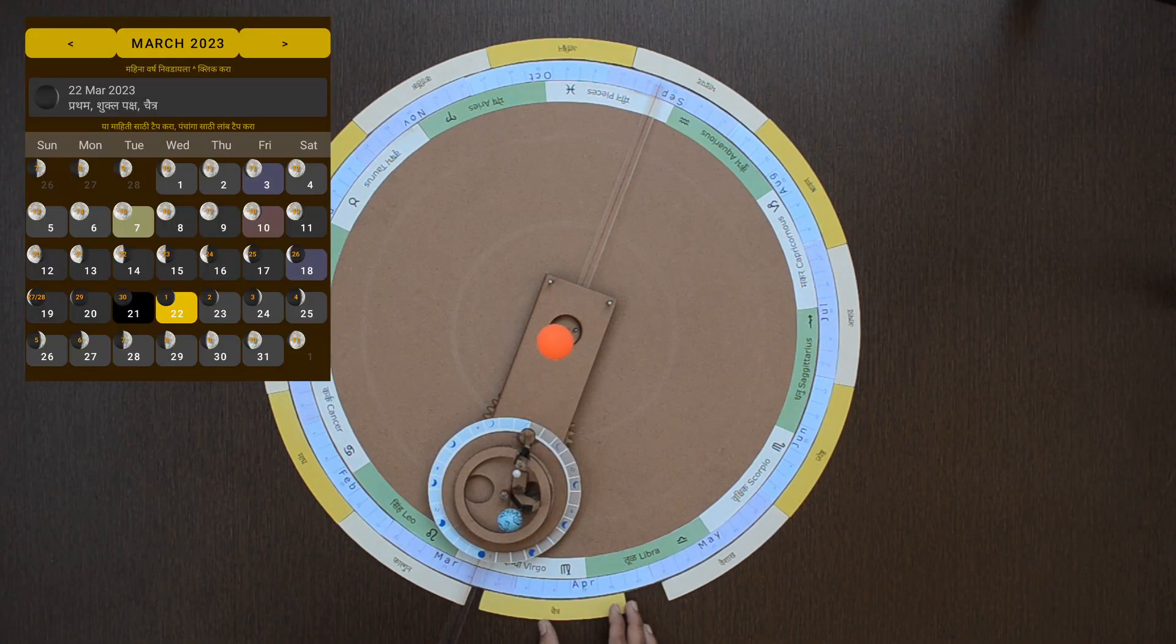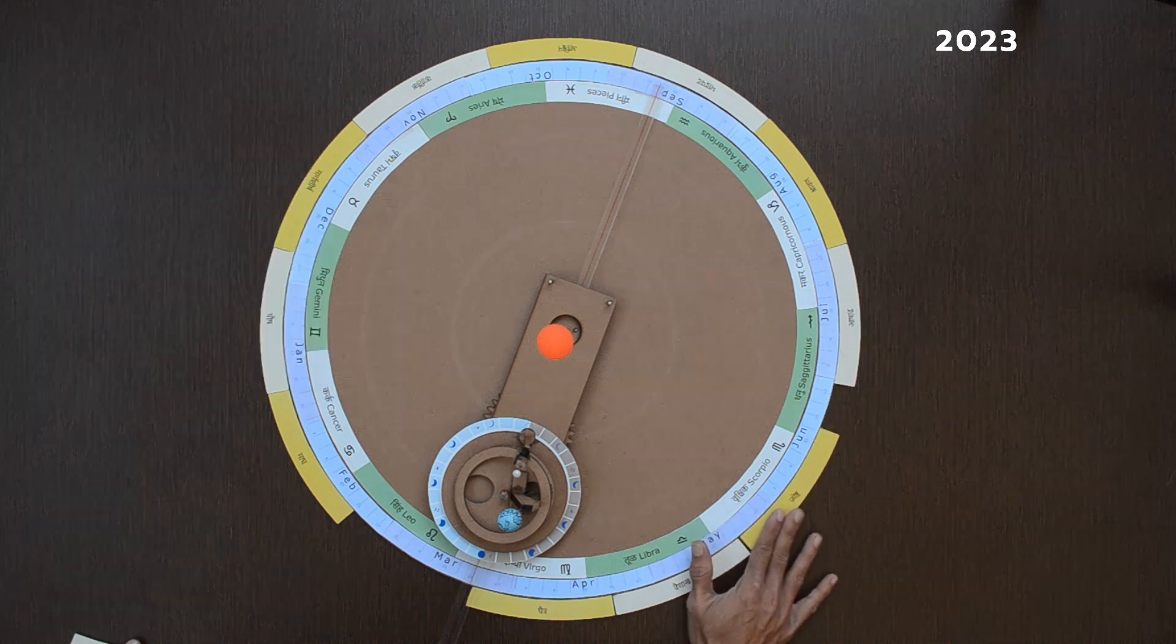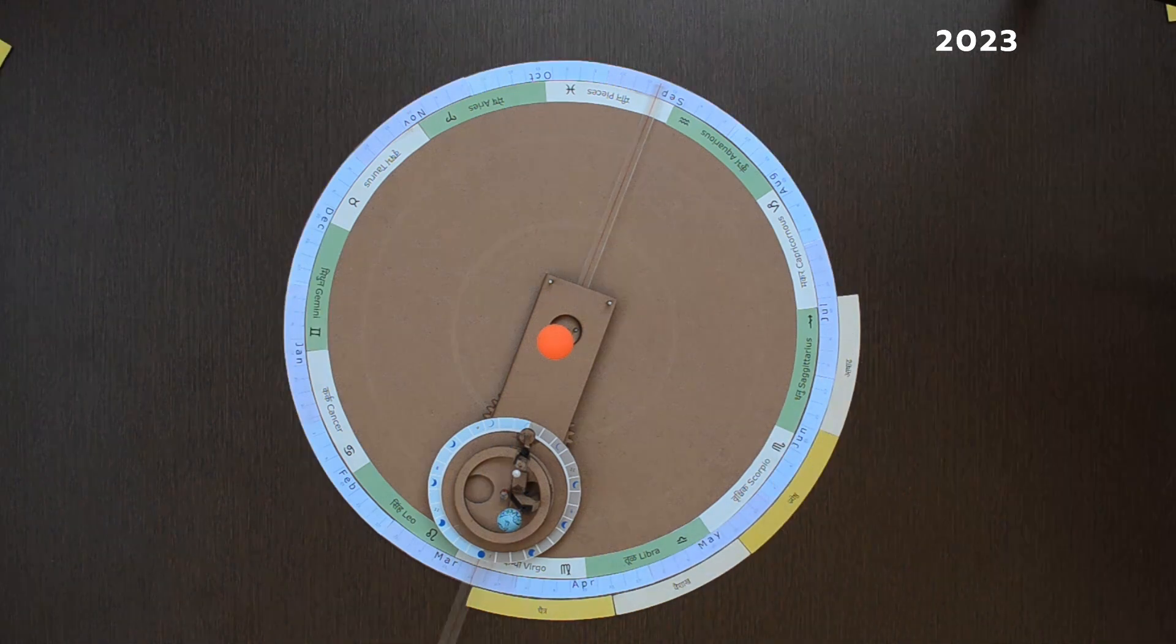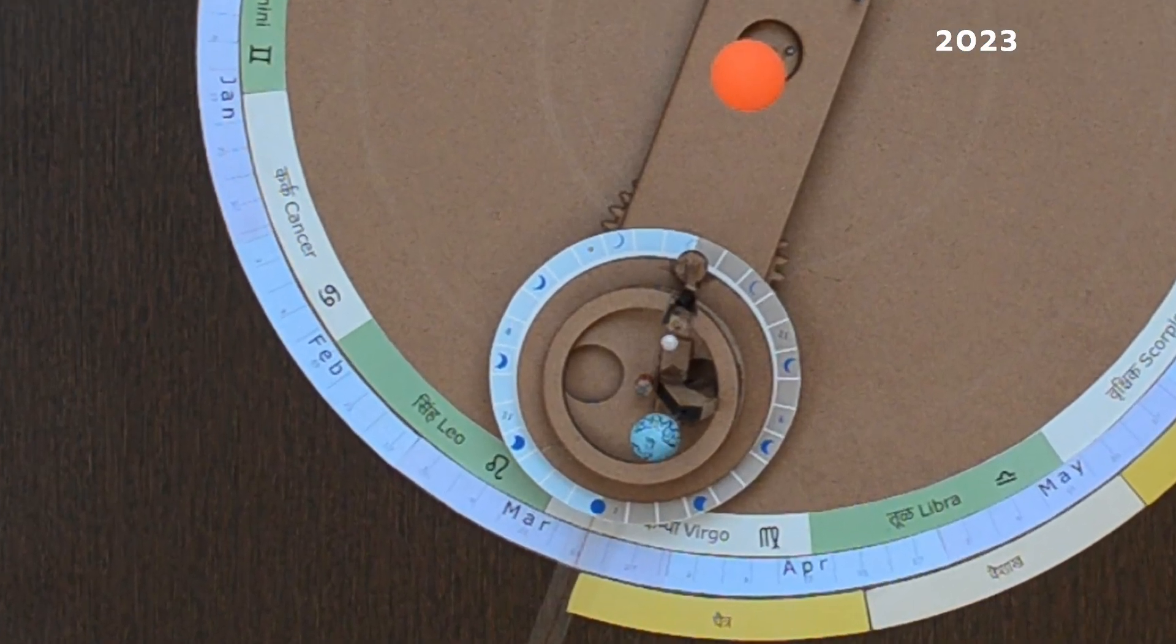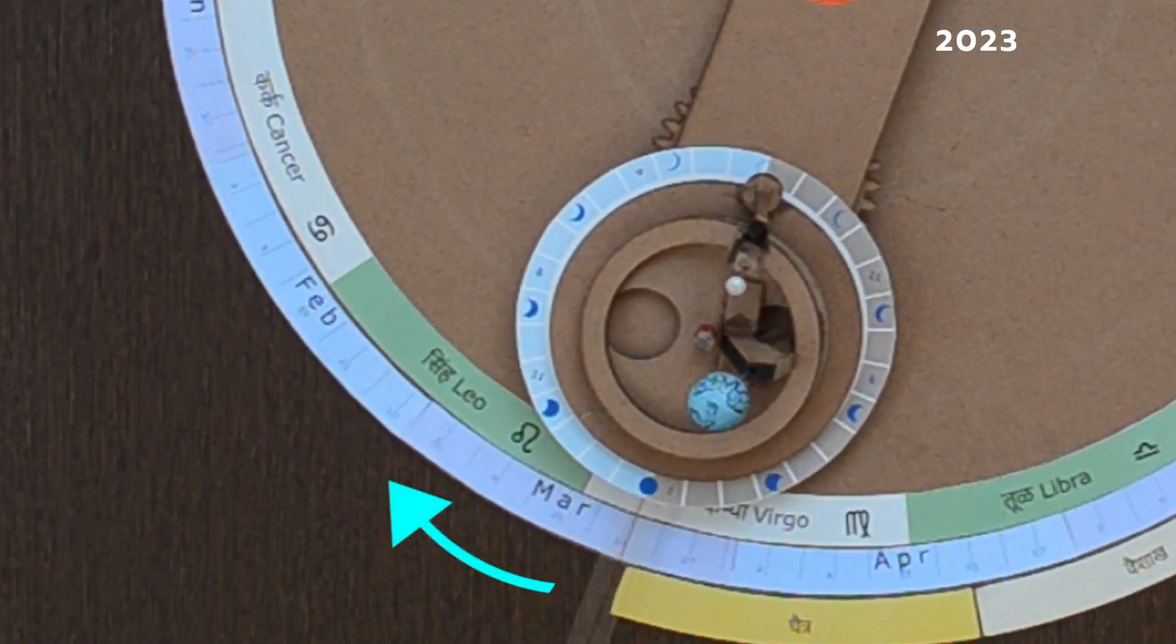Moving on, in the year 2023, Chaitra month starts on 22nd March, 22 days earlier than the year 2021. If the same sequence is followed, we may have to celebrate Holi in monsoon and Diwali in summer. This is where extra month or Adhikmas comes handy. Let us move on.